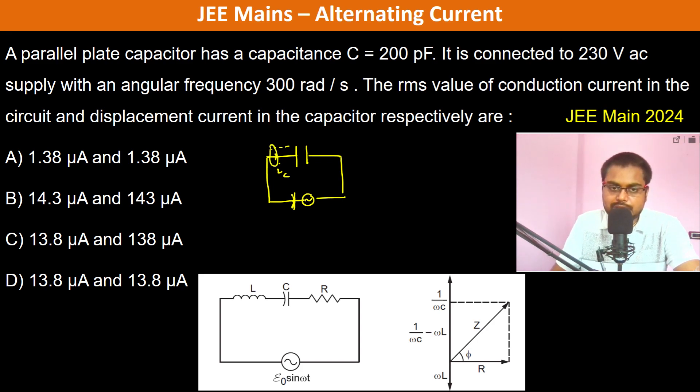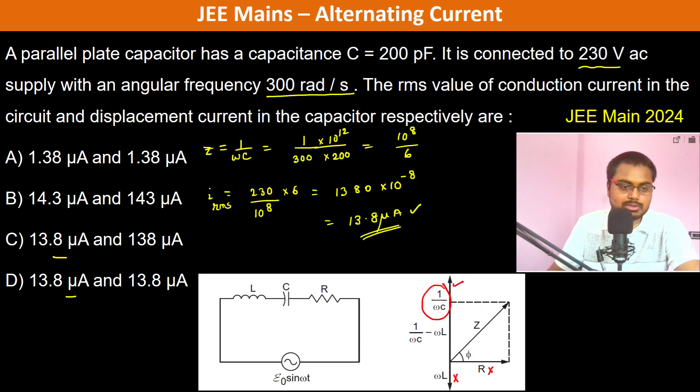Now the same magnetic field is going to be continuous here also, so therefore there must be some current. And this is known as the displacement current. So displacement current and conduction current are going to have the same magnitude. Therefore D is going to be the answer. Thank you.